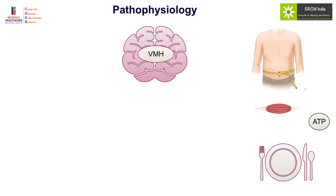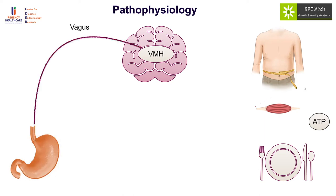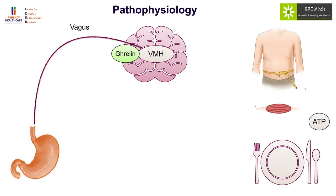The body gives a clear-cut hunger signal mediated from the stomach via the vagus nerve when there is decreased distension of the stomach, telling the ventromedial hypothalamus to start eating. Another hunger signal is ghrelin, which is secreted by the stomach in response to hunger and also stimulates the ventromedial hypothalamus to cause increased dietary intake.